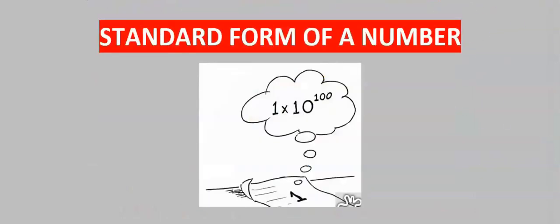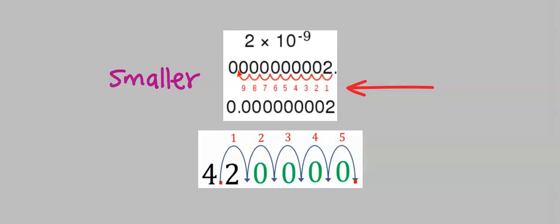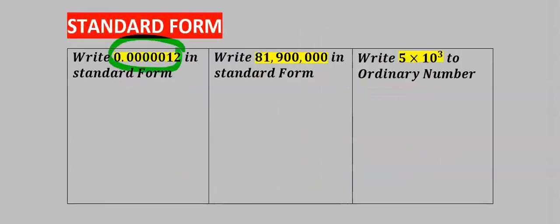Let's consider standard form of a number. Standard form involves moving a decimal to the left for smaller values, or moving the decimal to the right for bigger numbers. Let's write this number in standard form.